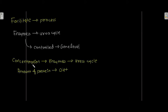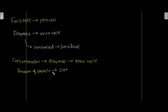The concentration of urea cycle enzymes in your body depends upon the amount of protein in your diet. If you are consuming more protein, then obviously more nitrogen will be produced, and to fix that nitrogen, more enzymes of the urea cycle will be required.